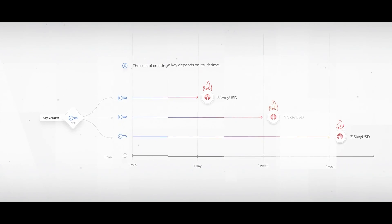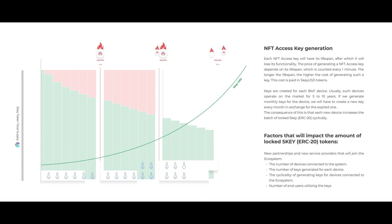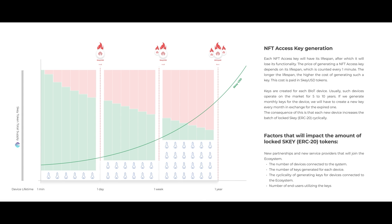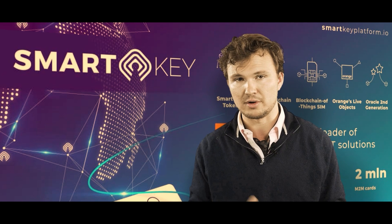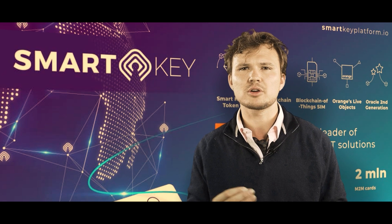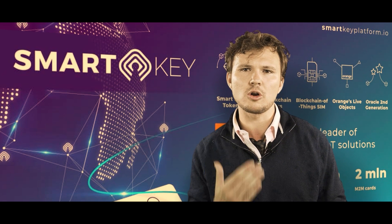There are two more things we have to talk about here. Firstly, when the service provider swaps SQERC20 tokens for SQUSD, the ERC20 tokens become locked. That means they will never return to the market — they're gone. The smart contract won't allow them to be unlocked.